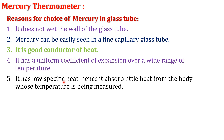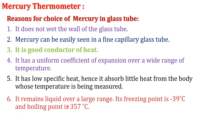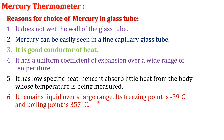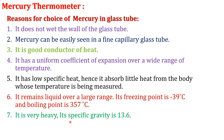Mercury has low specific heat. Specific heat is the amount of heat per unit mass required to raise the temperature by 1 degree Celsius. If the specific heat is low, it absorbs little heat from the body being measured. Mercury remains liquid over a large range since its freezing point is minus 39°C and boiling point is 357°C.